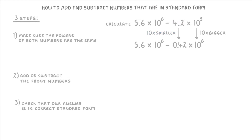Now that the powers are both the same, we move on to step 2 and subtract our two front numbers: 5.6 minus 0.42, which is 5.18. We keep the rest the same and tag on the times 10 to the power of 6. The last step is to check that our answer is in standard form — which it is — so 5.18 times 10 to the power of 6 is our final answer.